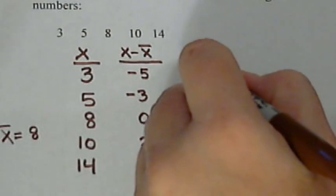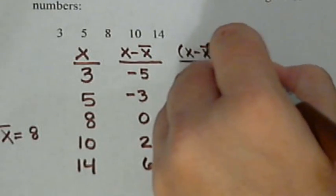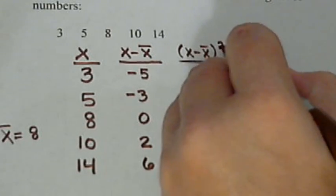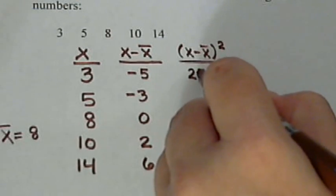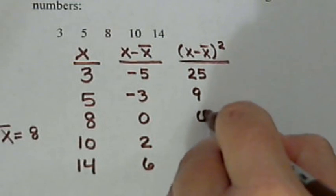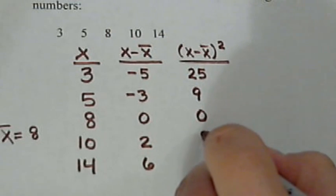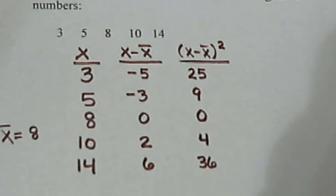Okay, we're going to make another column. What we're going to do here is take these numbers we just calculated and square them. So, negative 5 squared is 25. Negative 3 squared is 9. 0 squared is 0. 2 squared is 4. 6 squared is 36.